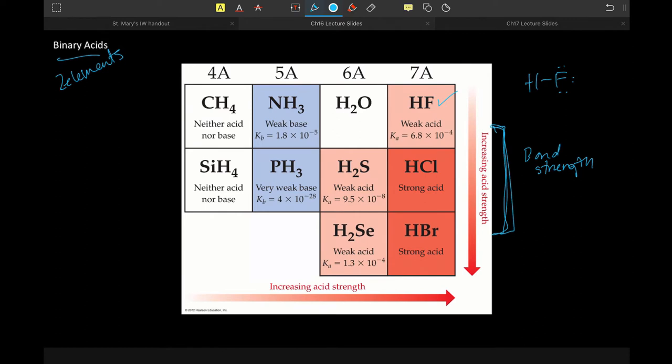When we're talking about a period trend, acid strength tends to increase as bond polarity increases. And bond polarity, especially for a binary series, just has to do with electronegativity.